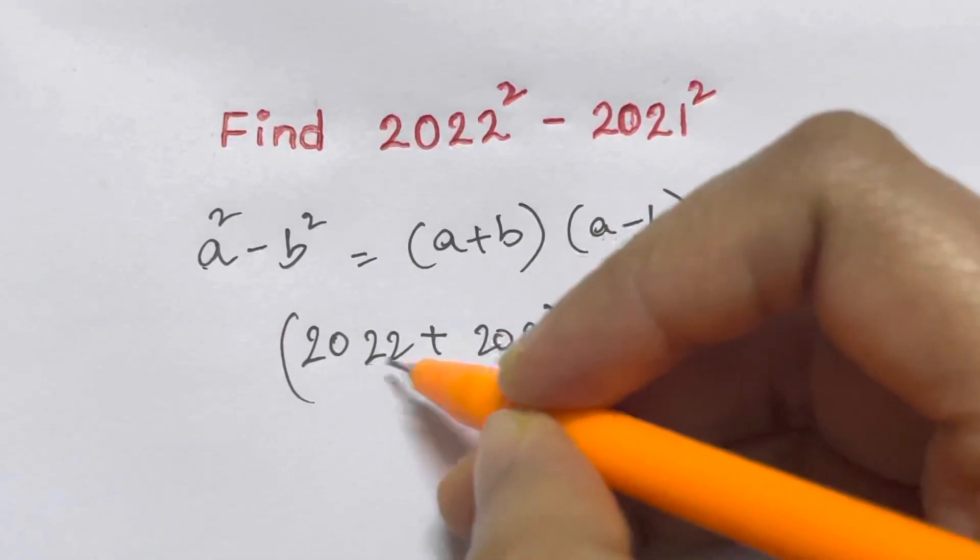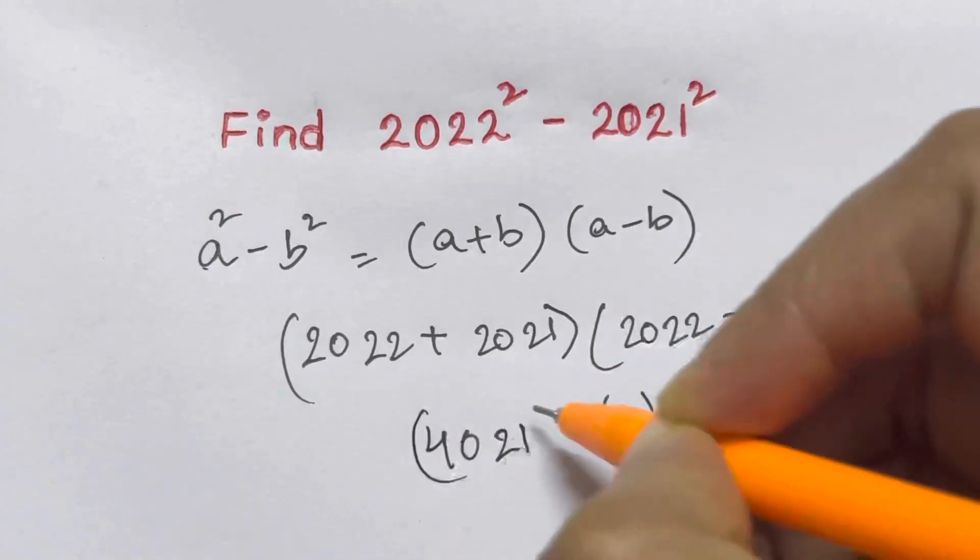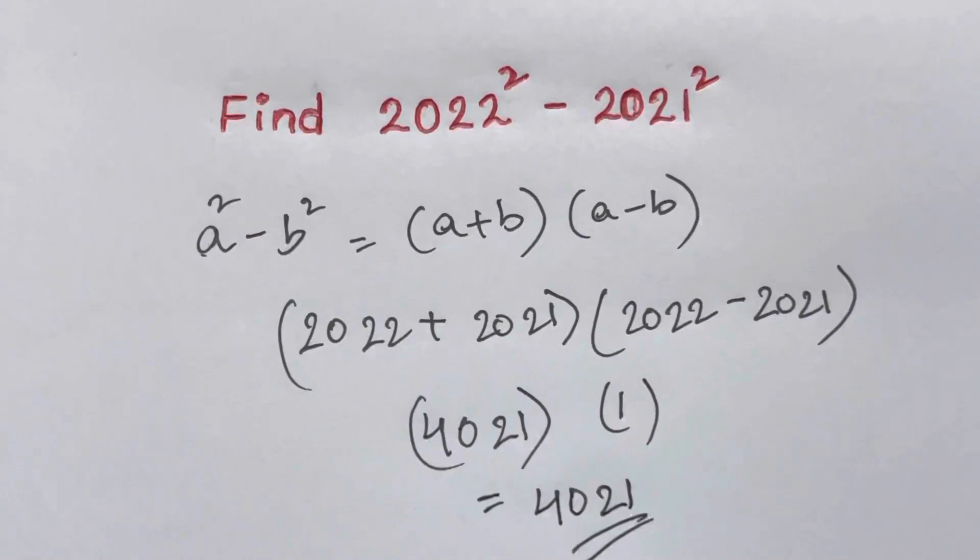So 2022 minus 2021 is just 1, and 2022 plus 2021 is 4021. So your answer is 4021. Wasn't that simple guys? You don't even need to use a calculator.